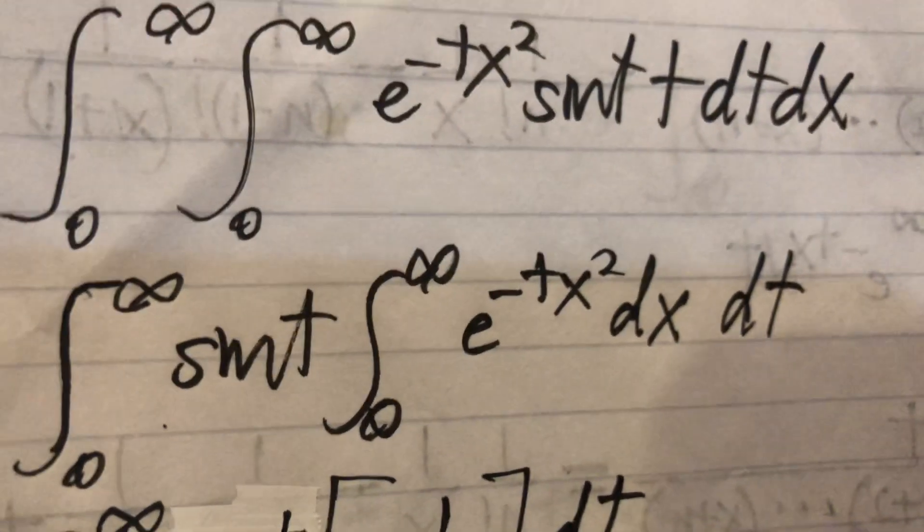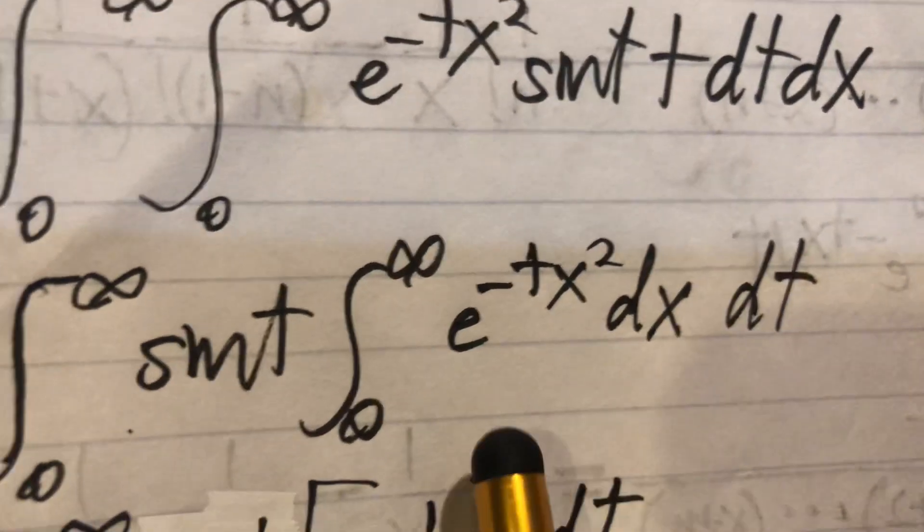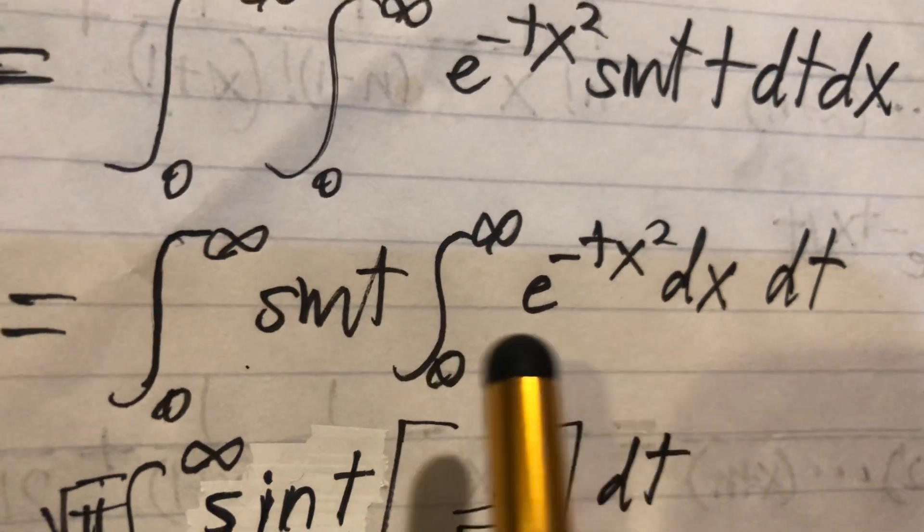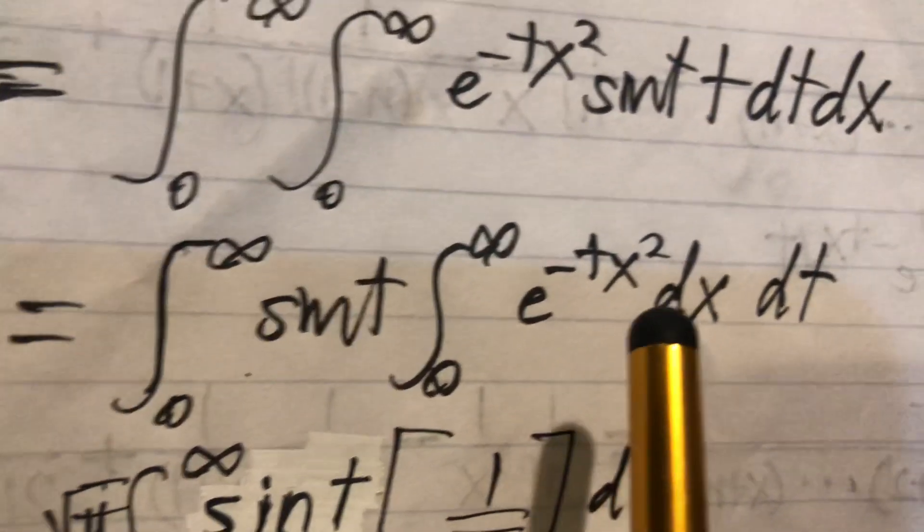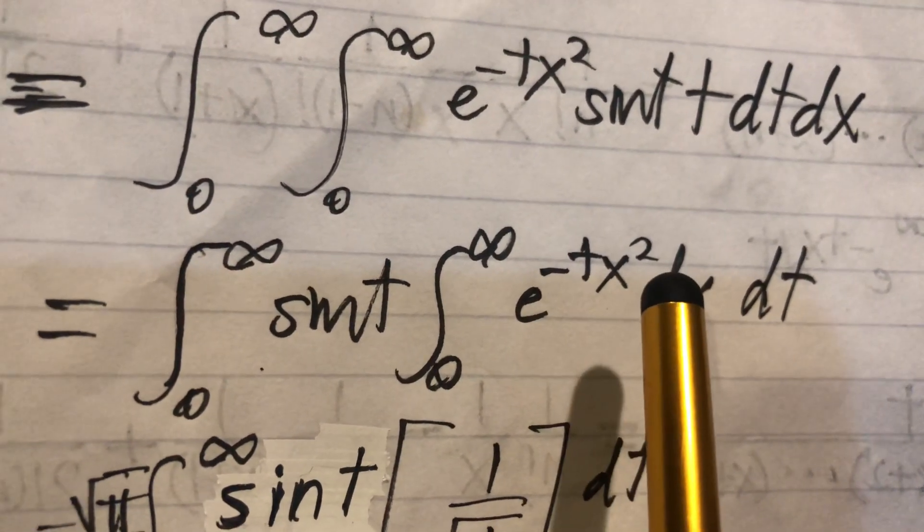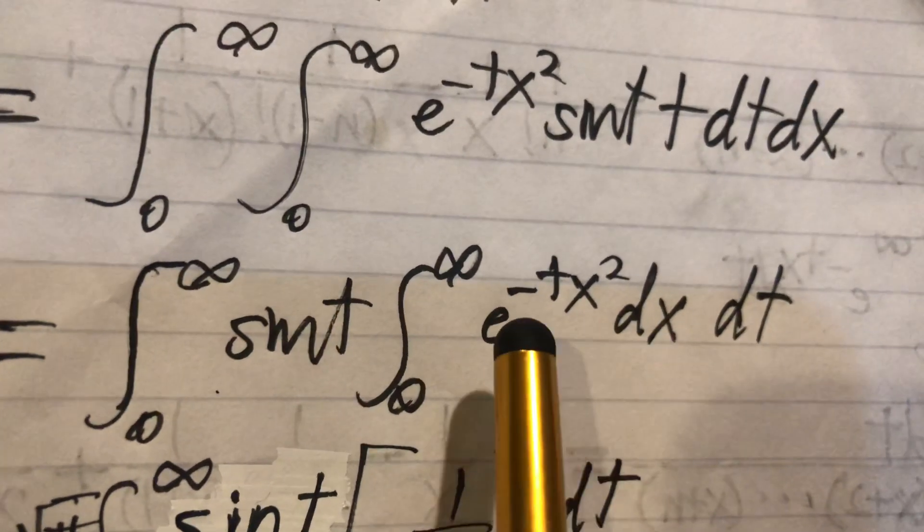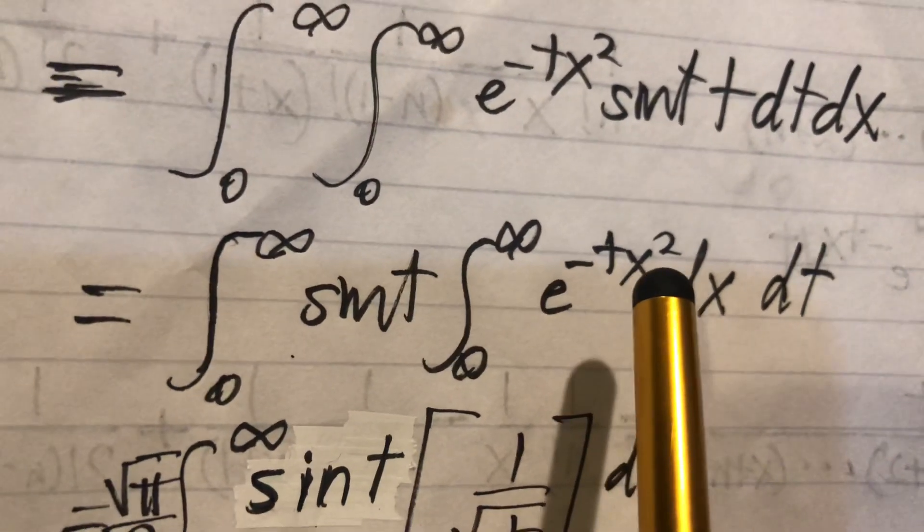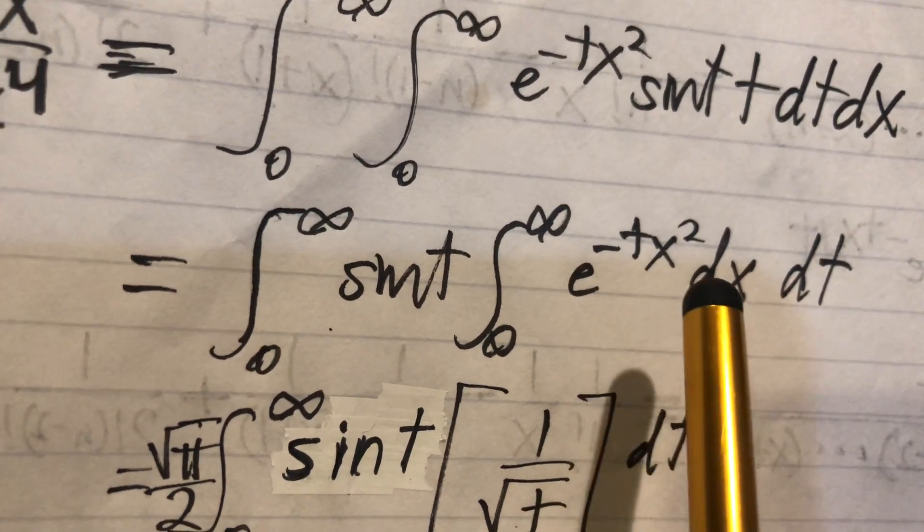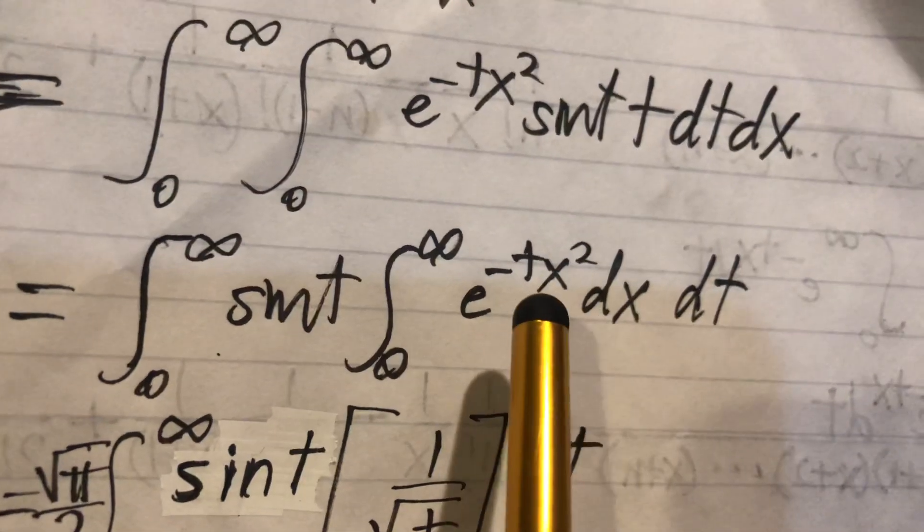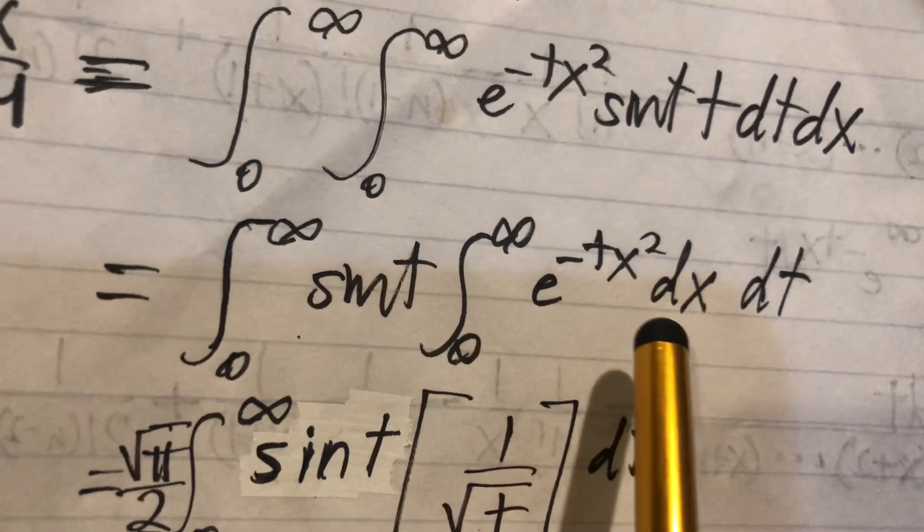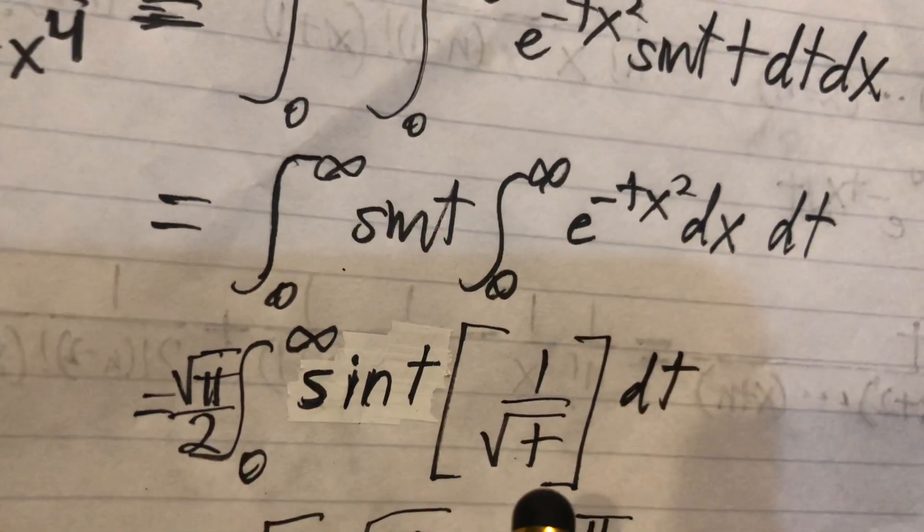We put that in the center area here. The sine can come out because it's only with respect to t. So we need to find the integral of e to the minus tx squared. We could do a u substitution - this is a well-known integral, basically a variation of the Gaussian integral, and this gives us 1 over the square root of t.